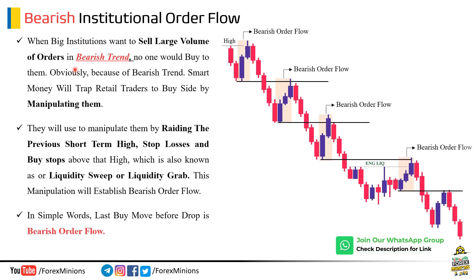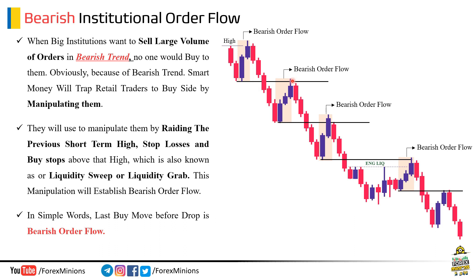Similarly, if we talk about bearish order flow, this gives us an indication of a bearish trend. When big institutions want to sell large volume of orders in a bearish trend, no one would buy from them — obviously, because of the bearish trend. Smart money will trap retail traders to the buy side by manipulating them. They manipulate by raiding the previous short-term high, stop losses, and buy stops above that high — also known as a liquidity sweep or liquidity grab. This manipulation will establish bearish order flow. Notice these bearish order flow areas: market came back to mitigate their buy orders, and after mitigation, market started moving to the downside. Such levels are really strong entry points, because smart money always gives huge value to these order flows prior to any other zone. In simple words, the last buy move before a drop is bearish order flow.